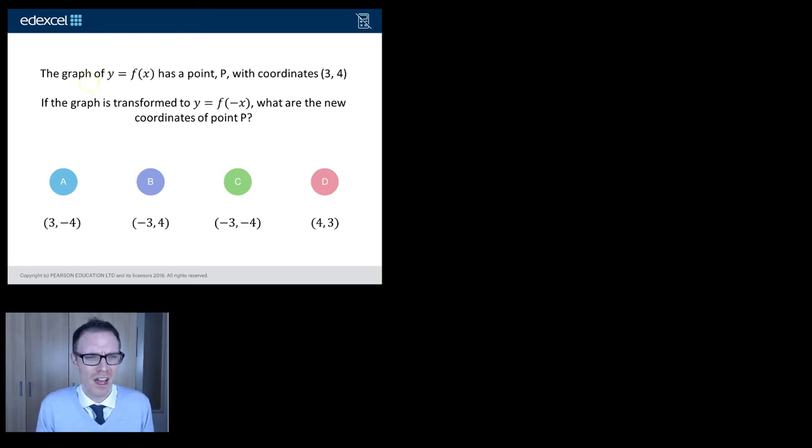So, let's take a look at it. The graph of y = f(x) has a point P with coordinates (3, 4). If the graph is transformed to y = f(-x), what are the new coordinates of point P?